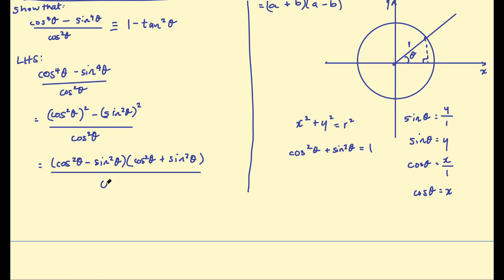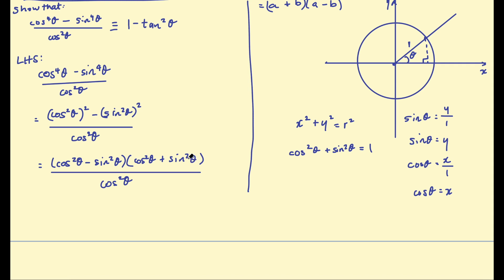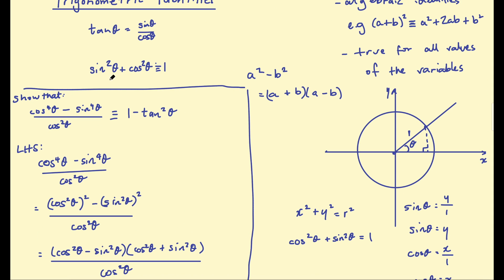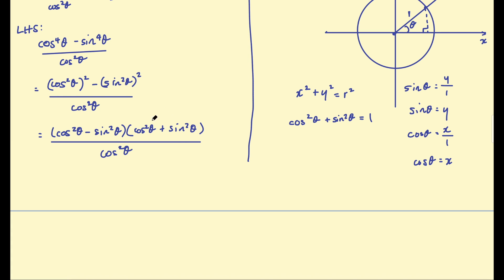This is still divided by cosine squared theta. Look at the expression with fresh eyes and see what else you can simplify. Can you see an identity we've been talking about in this expression? Cosine squared theta plus sine squared theta equals 1 — that identity. So this simplifies to 1. Then we're left with 1 times cosine squared theta minus sine squared theta in the numerator, all over cosine squared theta.